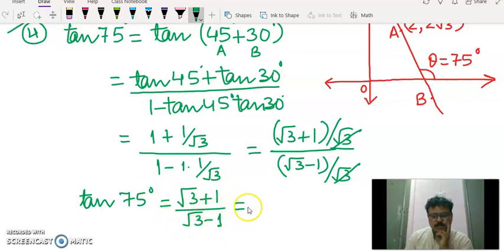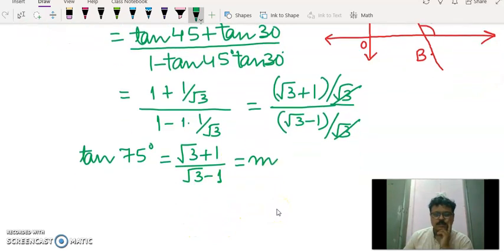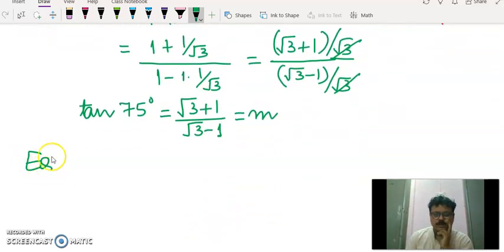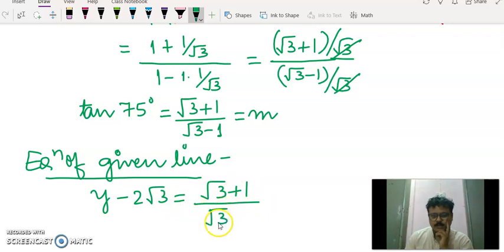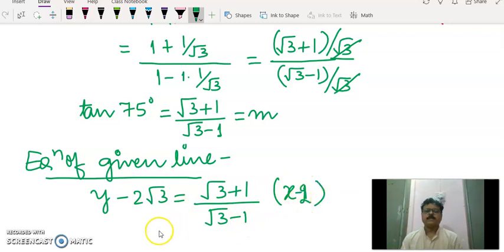This is basically the value of slope of the given line. So what we have to find? Equation of the given line. This line is passing through 2 comma 2 root 3 so y minus y1 is equal to m into x minus x1. I think you all can solve this and we will be getting the answer of this particular question.